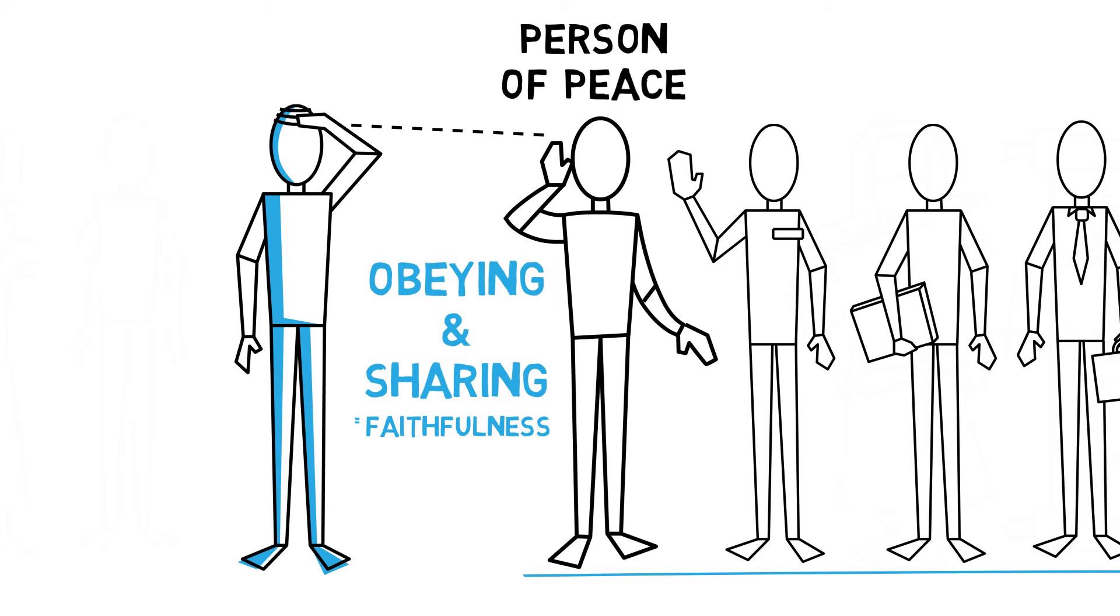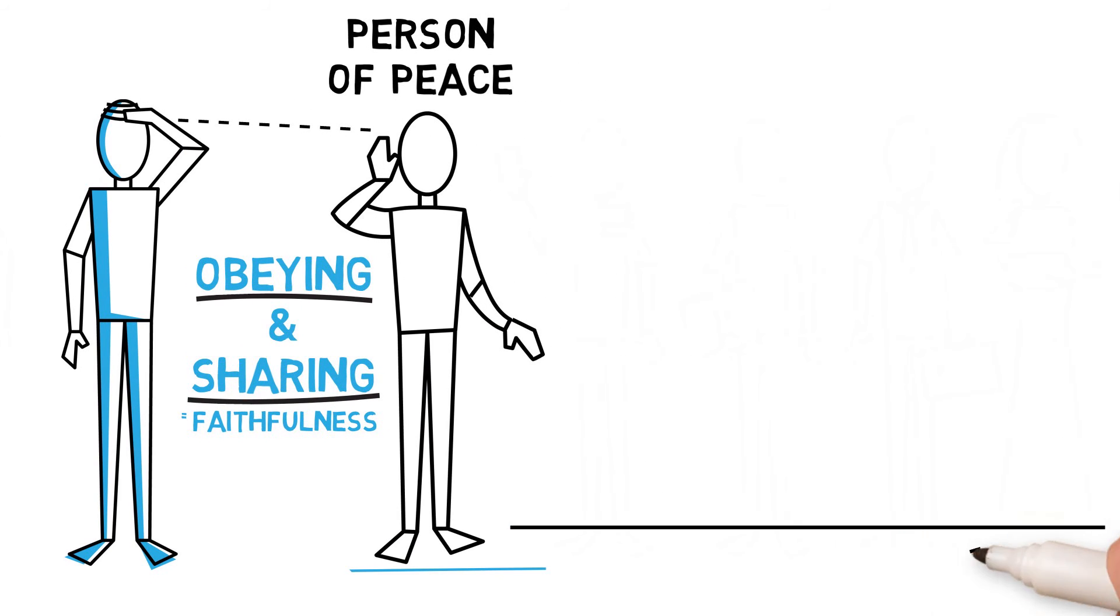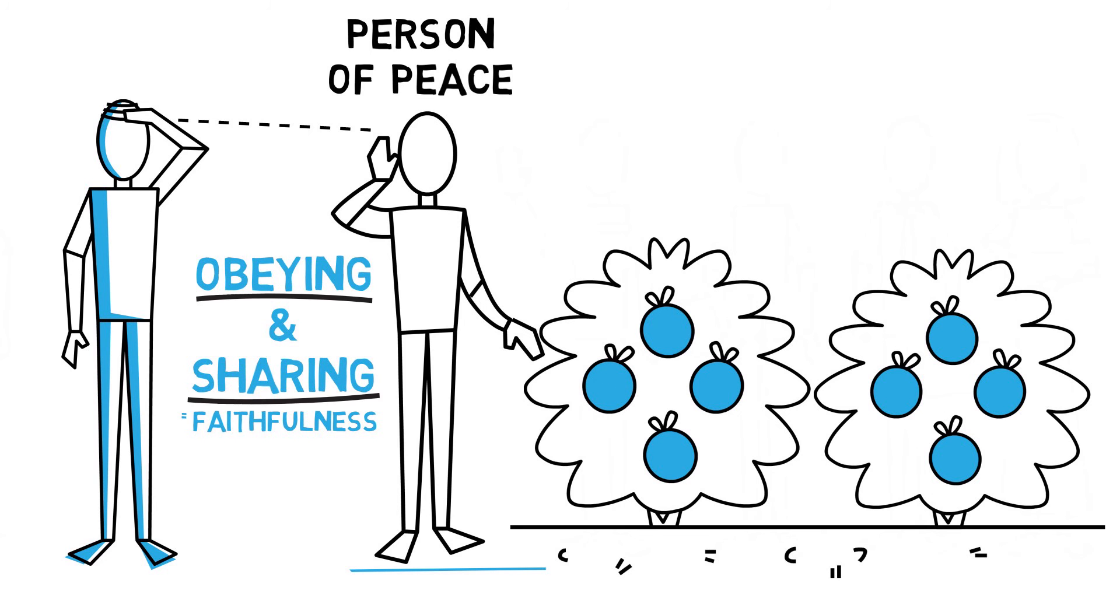Remember, faithfulness is demonstrated by obeying what God tells us and sharing it with others. Faithful people who obey and share are like the good soil that Jesus talked about. Jesus said, A few seeds fell on good ground where the plants produced 30 or 60 or 100 times as much as was scattered.